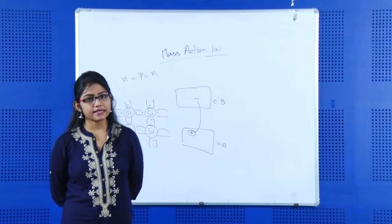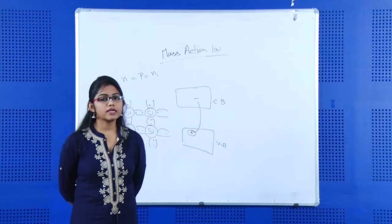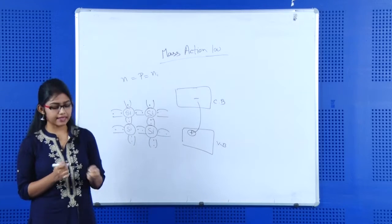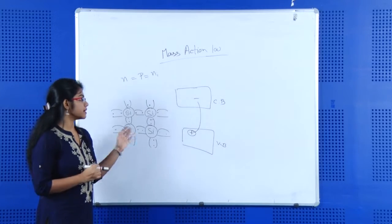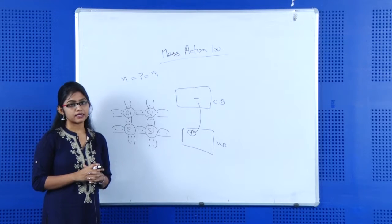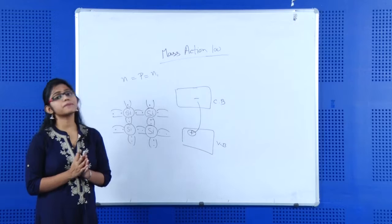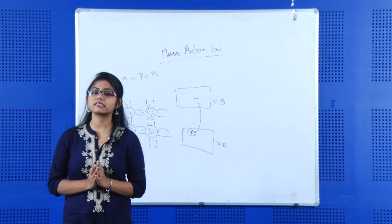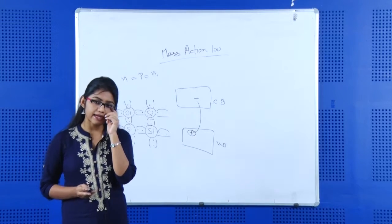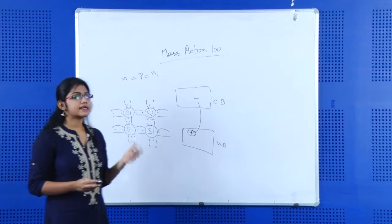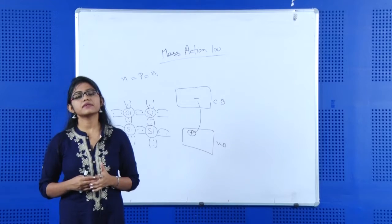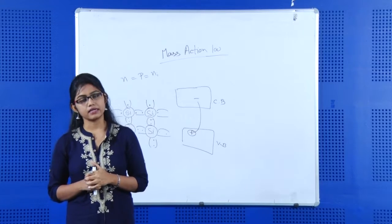But for better conductivity, we actually add a dopant element into this pure semiconductor, and the result is called an extrinsic semiconductor. In case of an impure or extrinsic semiconductor, we add acceptor atoms or donor atoms for better conductivity, giving us n-type semiconductor and p-type semiconductor.